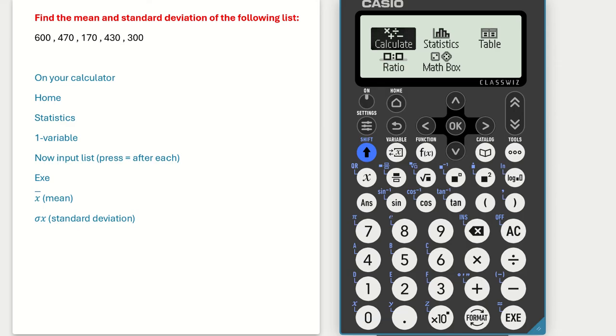First thing you do when you turn on your calculator is scroll across to statistics. Click on OK. You then select one variable.